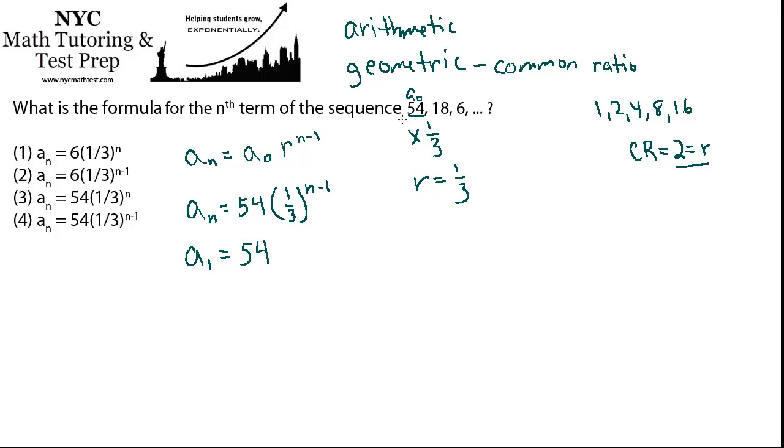So it should come out to be 54, right? Let's see if it does. So that's 54 times 1/3 to the, what's n, in this case this is a sub 1, so n equals 1, so 1 minus 1. Well 1 minus 1 is 0, so you have 1/3 to the 0, anything raised to the 0 power is 1. So this whole thing equals 54 times 1, which is 54, so it works. And that's always the case.